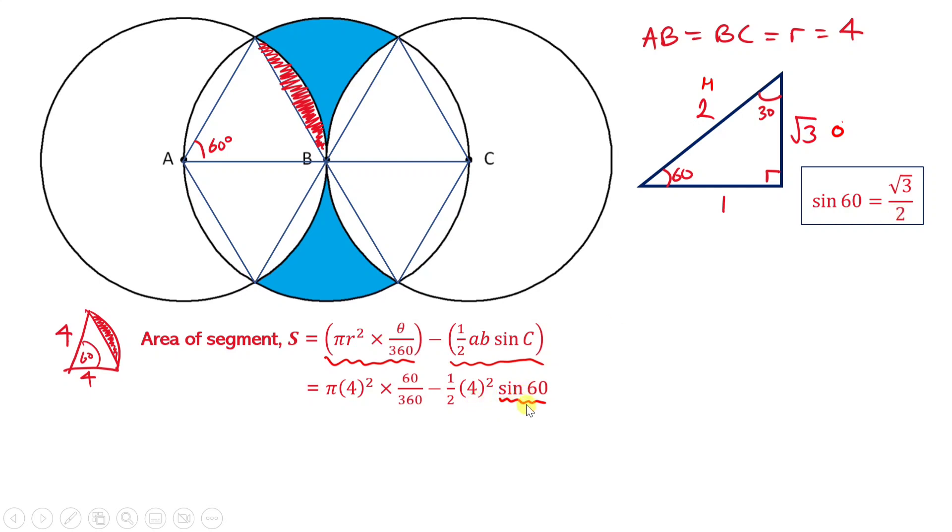So now we know what sin 60 is. So if we substitute sin 60 back in and then update all the quantities, we'll get something like this. The 4 squared becomes 16, so 16π. 60 over 360 reduces to 1/6. Half times 4 squared, which is half times 16. Half of 16 is 8. And again, √3 over 2. And then simplifying this further, we get the desired result: 8π/3 - 4√3.